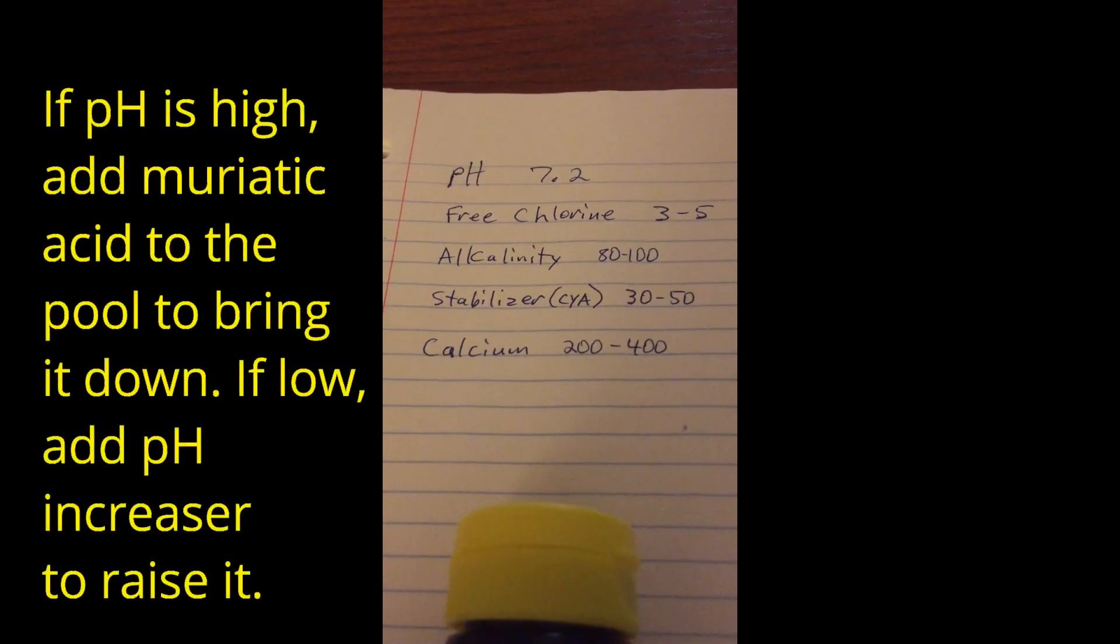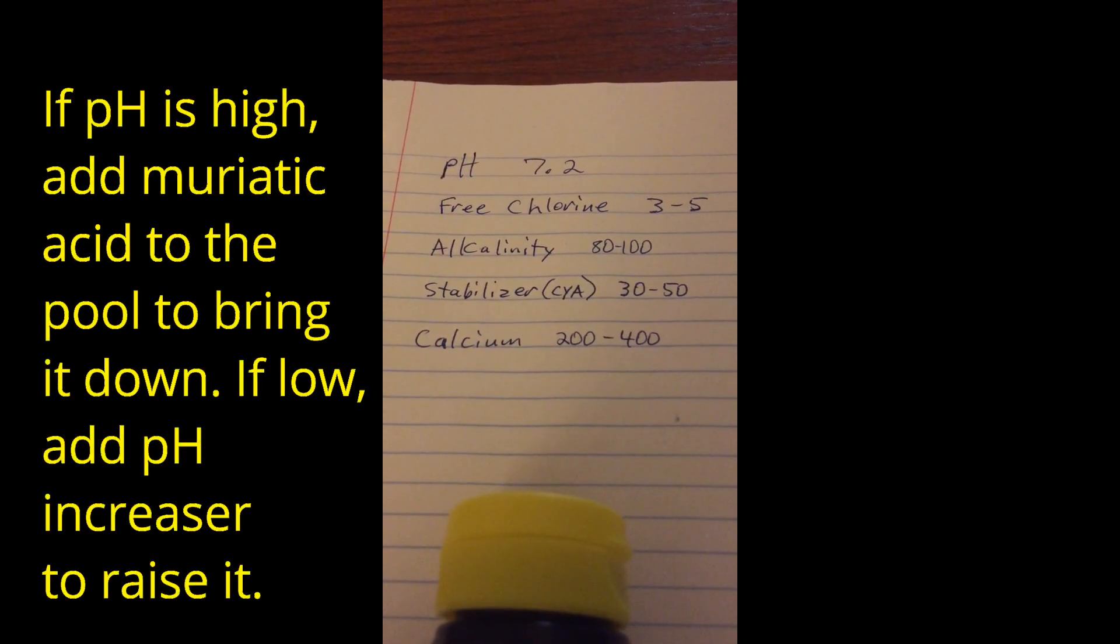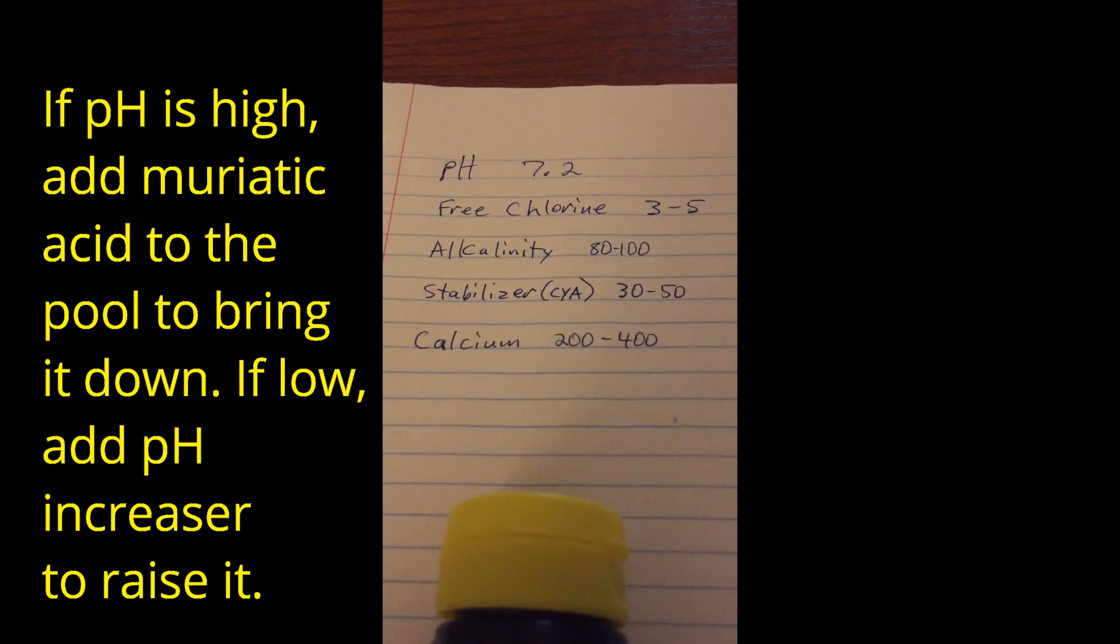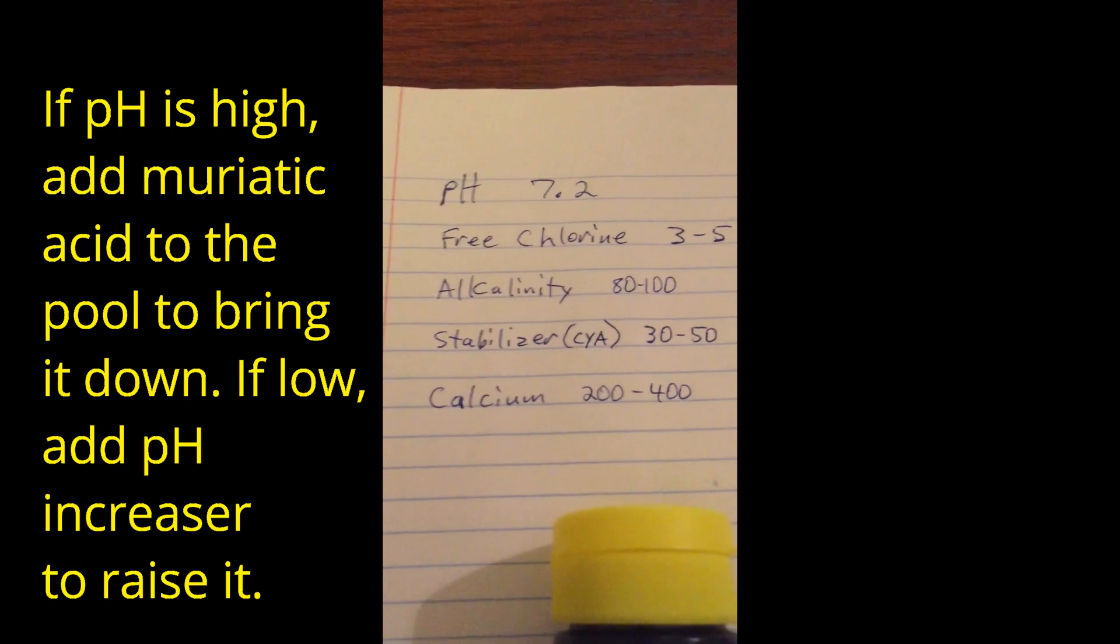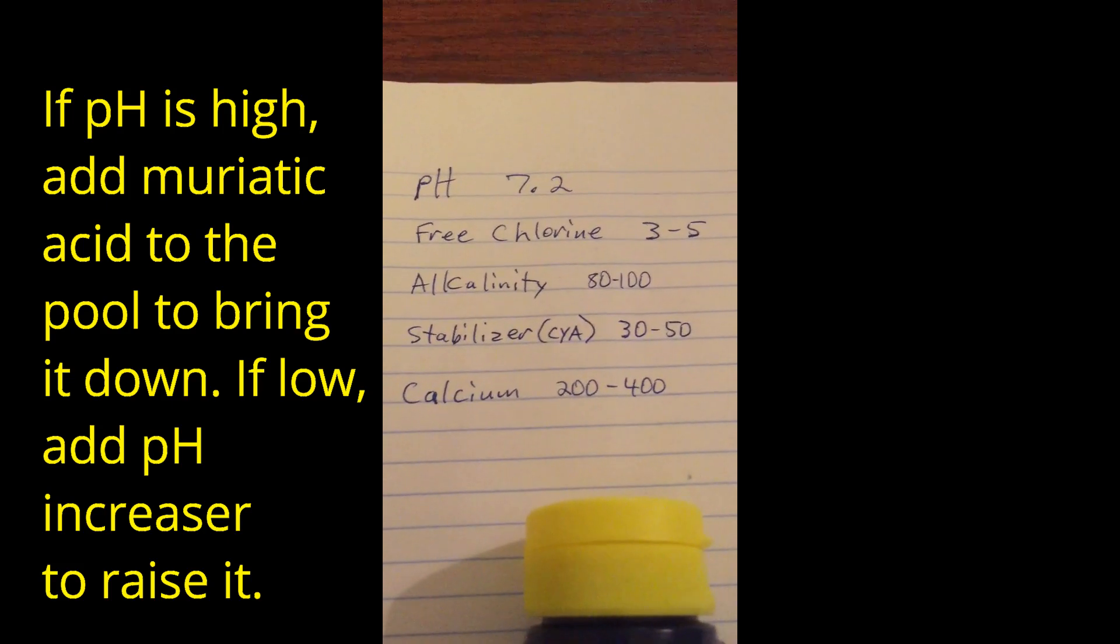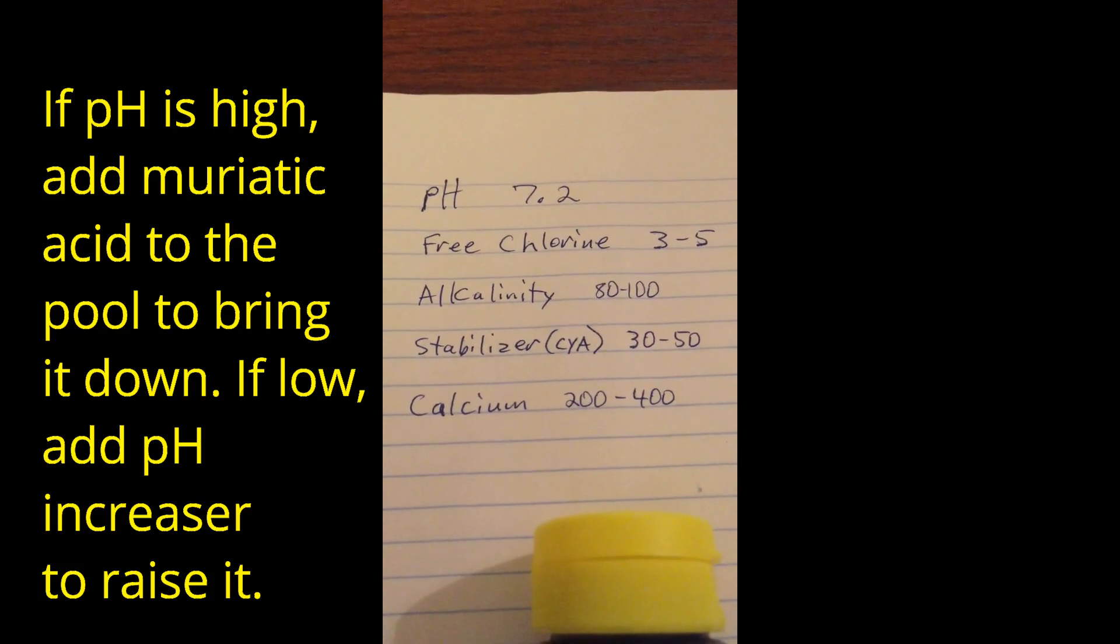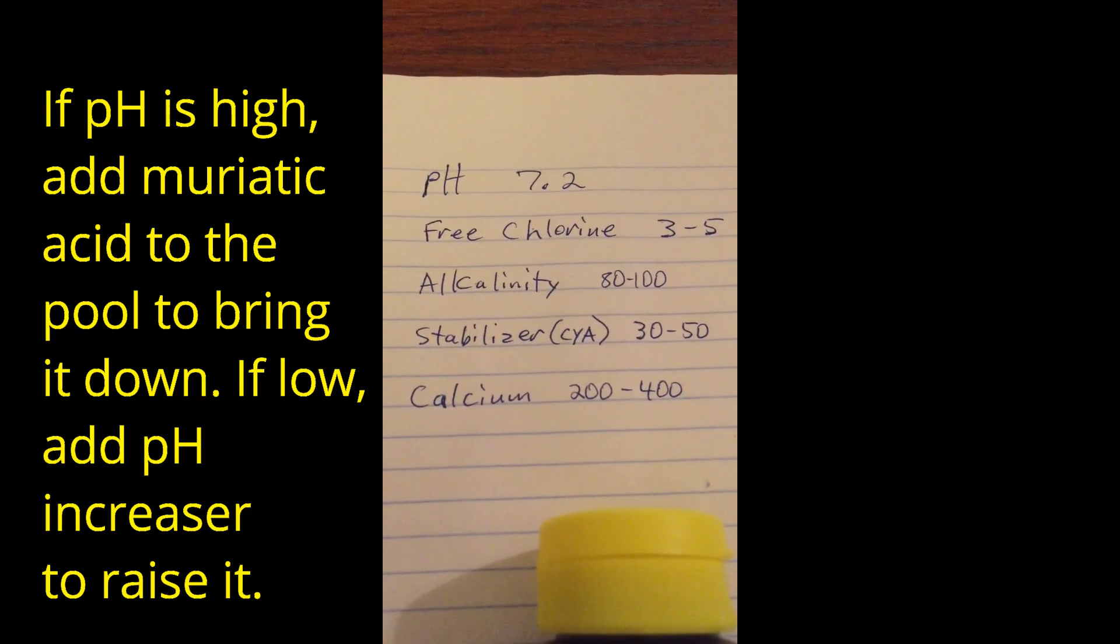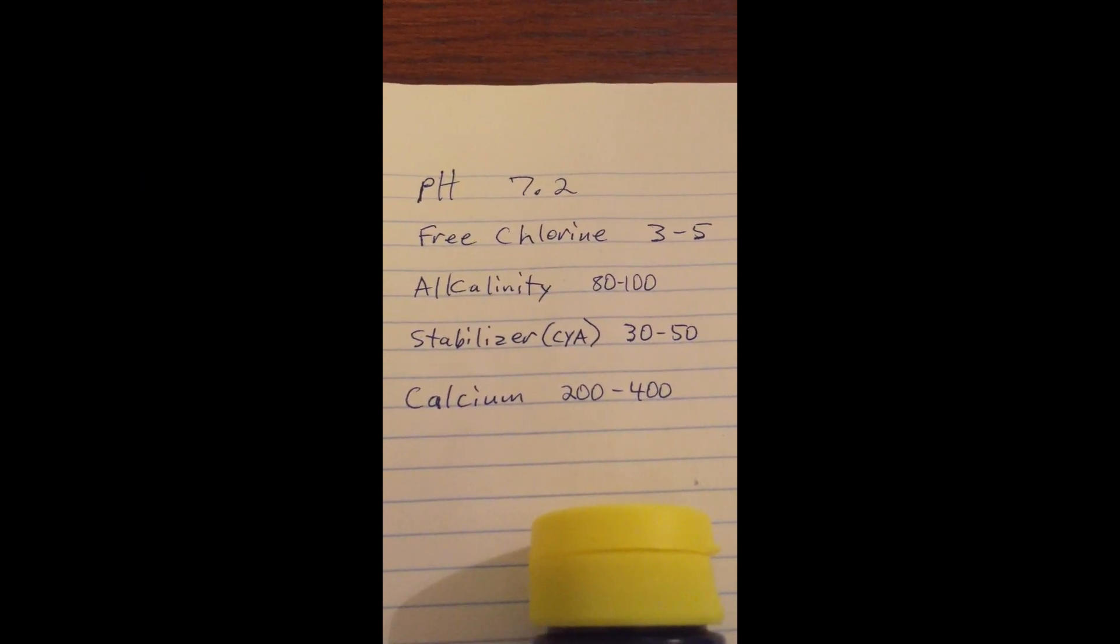The pH, you need to balance that around 7.2. That's what you want to do. 7.0 to 7.2, that's where you want the pH to be. If the pH is high, you bring it back down towards 7.2 by adding muriatic acid to the pool.